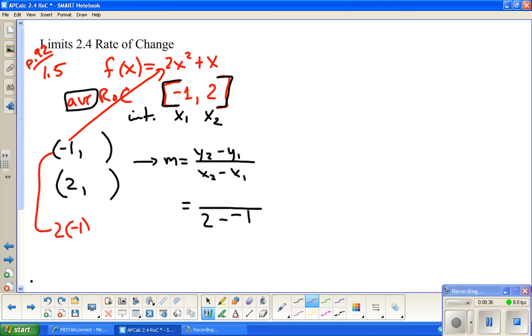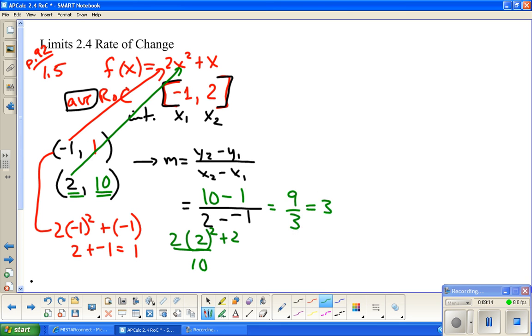I just need y values because this is average rate of change. I'm finding slope. So, y2 minus y1, x2 minus x1. I already know the bottom. Two minus negative one. I need some y values to go with. So, for this one, two times negative one squared plus negative one. So, negative one squared is one times two is two. So, this is one.